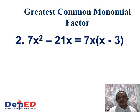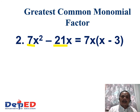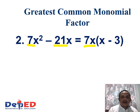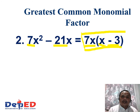Another example: 7x squared minus 21x. The GCF of the coefficients is 7, and the smallest exponent of x is 1. Therefore, the GCF is 7x. Then, 7x squared divided by 7x gives x, and negative 21x divided by 7x gives negative 3. Therefore, the factors of 7x squared minus 21x are 7x times the quantity of x minus 3.